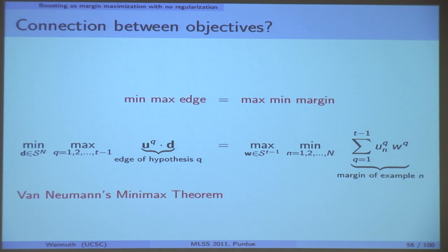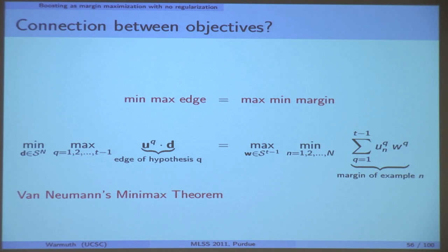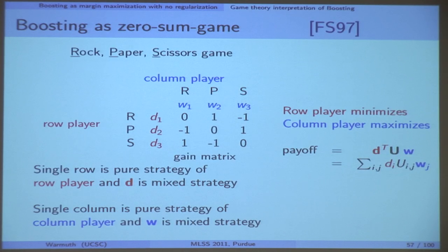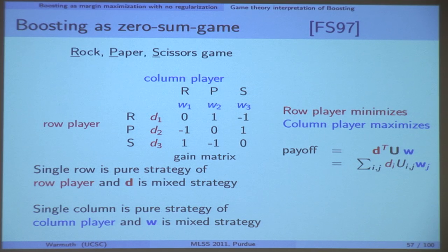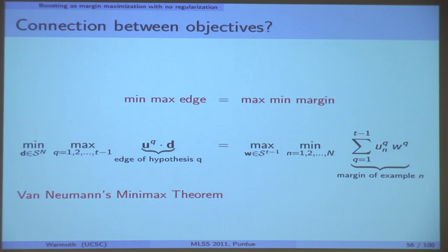I'm not going to prove this, but I'm going to give you visualizations. What I'm going to do now is go to game theory, because this is min-max, max-min — that happens in game theory. You might have seen this: zero-sum games.